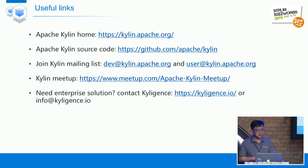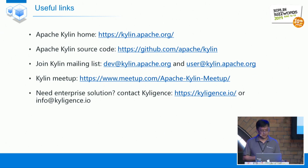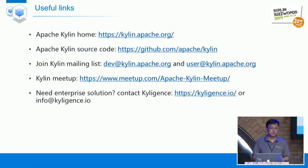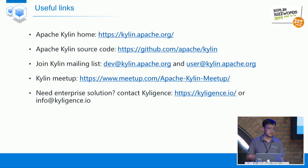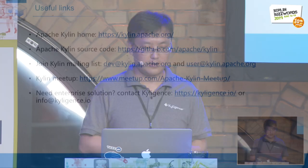Here are some useful links you can browse to learn more about Apache Kylin. We have meetups held in China, the US, and sometimes in Europe — mainly in Spain or England. In the future, we also wish to have meetups in Berlin. If you need the enterprise solution, you can contact Kyligence.